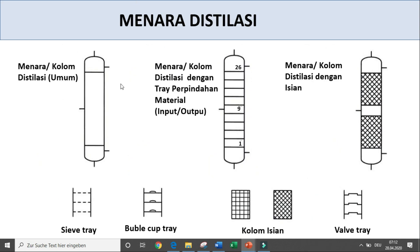Berikutnya menara distilasi. Menara distilasi umum seperti ini — yang paling kiri atas ini. Kemudian jenis tray: tray masuk, tray pada top, tray pada bottom — apakah ada isian, kalau isian isiannya seperti apa, kalau tray tray seperti apa. Ini yang dibahas detail di standar ini katalognya.